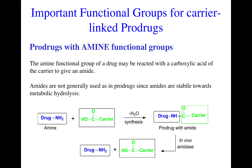In most cases, the carboxylic acid and the alcohol forming the ester-type prodrug approach have been used to develop the 10% of prodrugs that are currently on the market. Let me show you the reaction scheme of how an amide prodrug gets made.